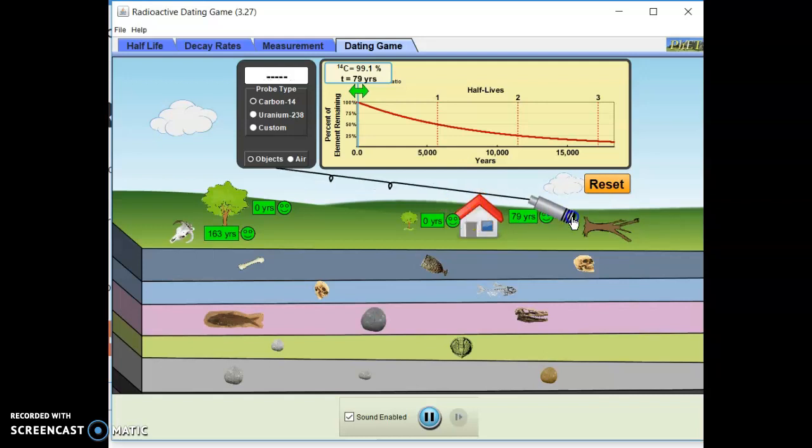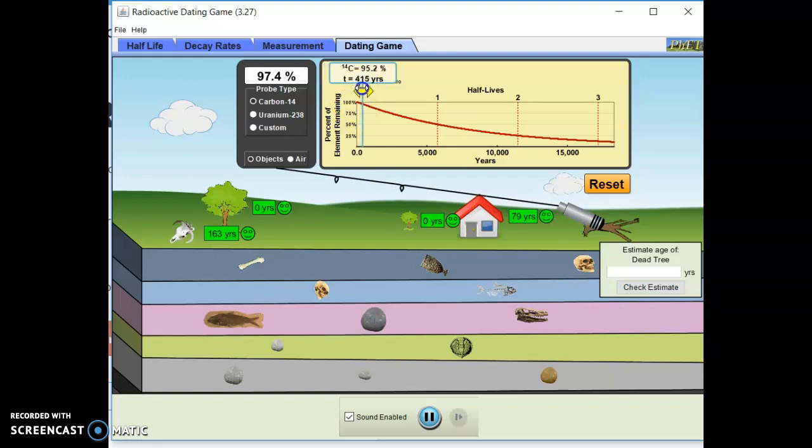A dead tree. 97.4. This part's kind of hard. Oh, there we go. 205. Okay. So we got that first layer. Remember when we talked about evidence of evolution, the lower the layer, the older the rock. Okay. So as we go down, we're going to start getting a little bit older.